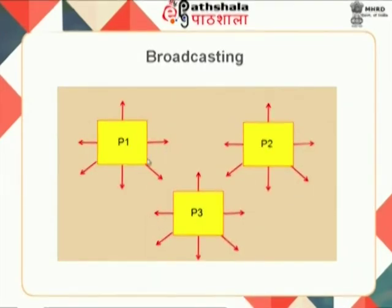The next is broadcasting. In broadcasting, each process sends a message to all other members of the network. How is this different from multicasting? In broadcasting, all messages go to all processes irrespective of whether they are part of the group or not. Every time a message arrives, a process looks at the message to see whether it is meant for them — which group it is meant for and whether they are part of that group. If they are part of the group, they accept the message; if not, they drop it. Obviously, there is a lot of network congestion if we use broadcasting instead of multicasting.